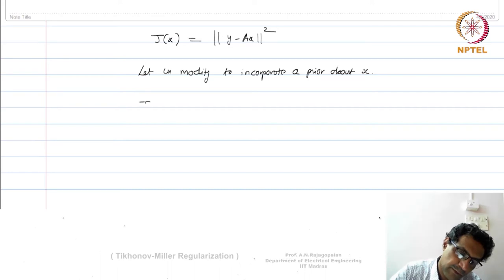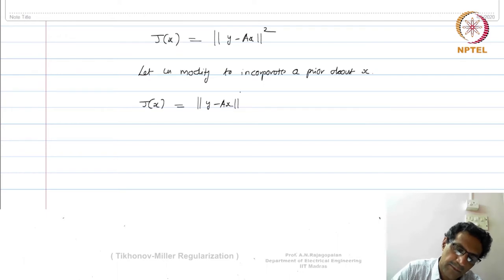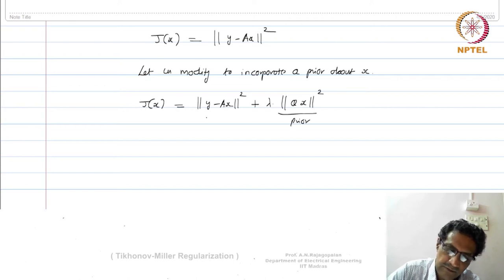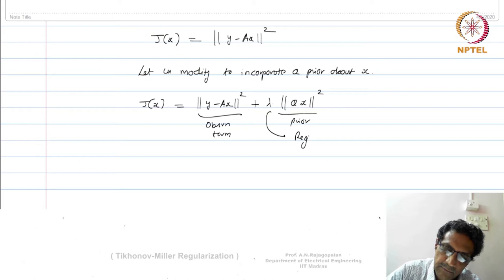What do we mean by that? We modify J(x) such that it becomes ||y - Ax||² plus λ times ||Qx||². This is called a prior, and this is your observation term. Lambda is called a regularization parameter.